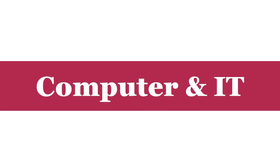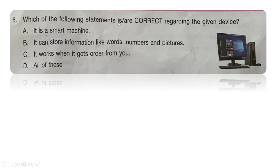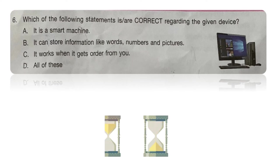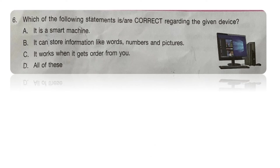Now let's go to the Computer and IT section. The first question: which of the following statements is or are correct regarding the given device? Option A: it is a smart machine. Option B: it can store information like words, numbers, and pictures. Option C: it works when it gets orders from you. Option D: all of these. The device shown is a computer — a smart machine that stores information and works on inputs from you. The right answer is option D: all of these.